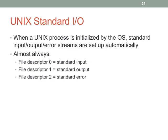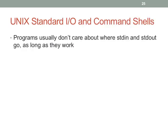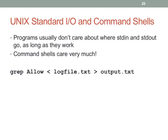To be good programmers, you should use the defined constants rather than magic numbers — use STDIN_FILENO, STDOUT_FILENO, etc. These definitions are in the unistd.h header file — 'Unix standard.' Programs really don't care where standard input and output go, but command shells do care a lot. When you type a command like 'grep allow < logfile.txt > output.txt', grep only gets two arguments: 'grep' and 'allow' — everything else is handled by the command shell, which redirects standard input and output.